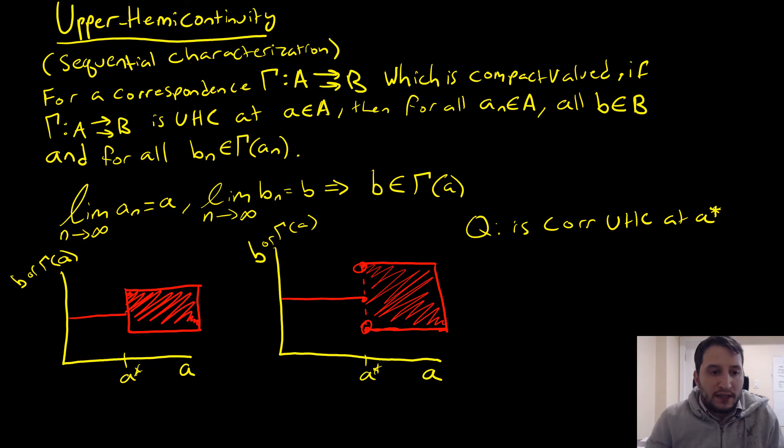So for a correspondence gamma, which maps objects from our domain A to our range B, which is compact valued, if our correspondence gamma is upper hemicontinuous at point A in our correspondence, then for all A_n in A, meaning our points that are near A here, and all B in B, and for all B_n in gamma(A_n), meaning this is the subsequence that we have here, we can take the limit of A_n as A_n goes to infinity, that's going to equal to our point A, meaning that we can approach it from both sides, and for B_n, we can approach it from any side up and down in our range. That implies that B is in our range.